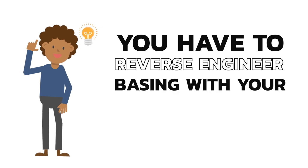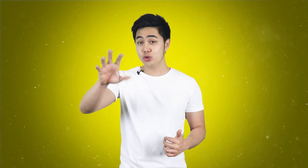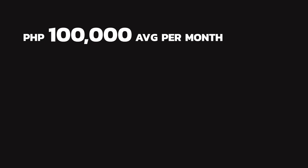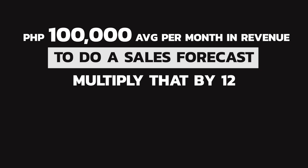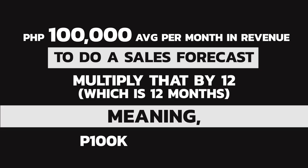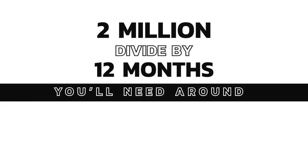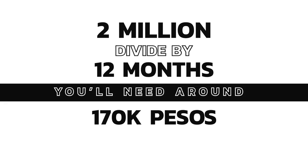Say, for example, you want to earn 2 million pesos in revenue for the year. You'll have to reverse engineer based on your current conversion rates. Let's say you're earning 100,000 pesos average per month in revenue. To do a sales forecast, simply multiply that by 12 months: 100,000 pesos × 12 equals 1.2 million, which is short of your annual goal. So let's do reverse engineering: 2 million divided by 12 months means you'll need around 170,000 pesos per month in revenue.